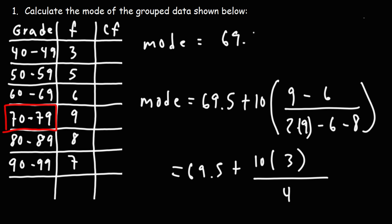So this is going to be 69.5 plus 10 times 3 is 30 divided by 4. 30 divided by 4 is 7.5. If we add that to 69.5, we get 77.